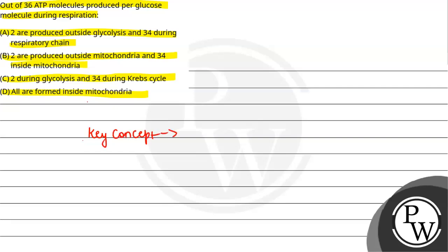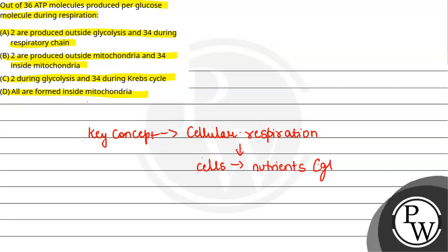The key concept here is cellular respiration. Cellular respiration is a vital process because it generates energy. What happens is that our cells convert nutrients — generally glucose molecules — and from these glucose molecules, energy is formed in the presence of ATP. ATP molecules are essentially our energy molecules, and through them our energy is generated.